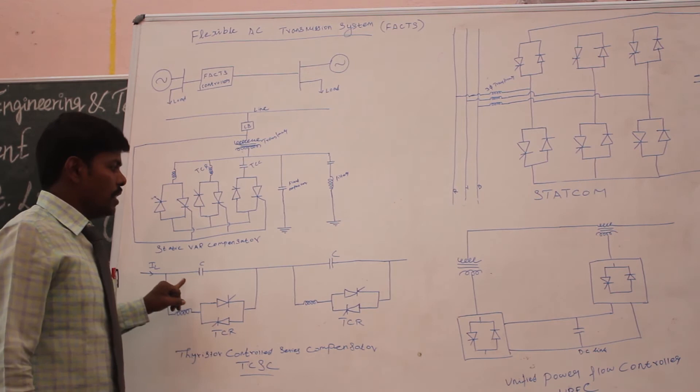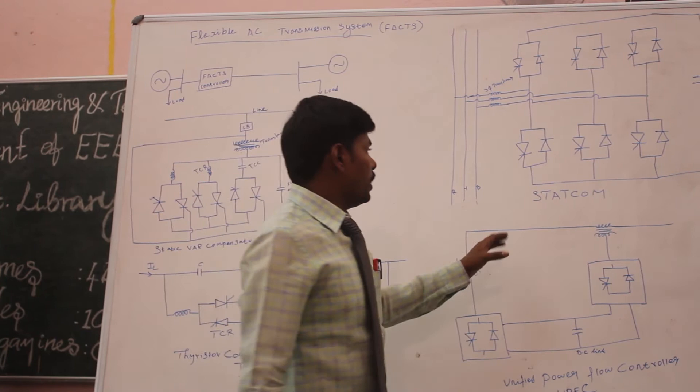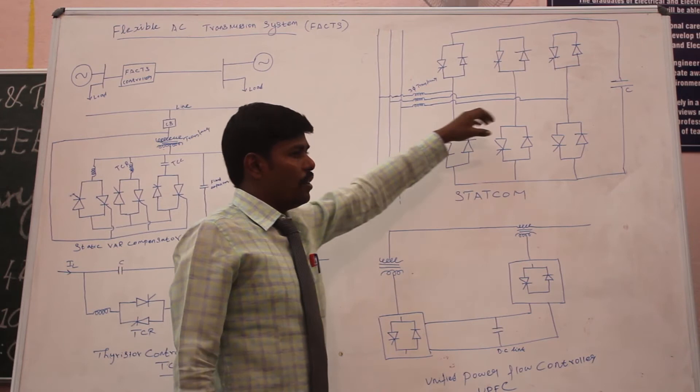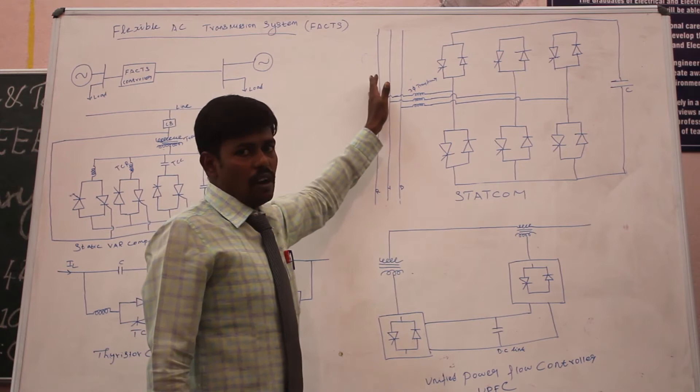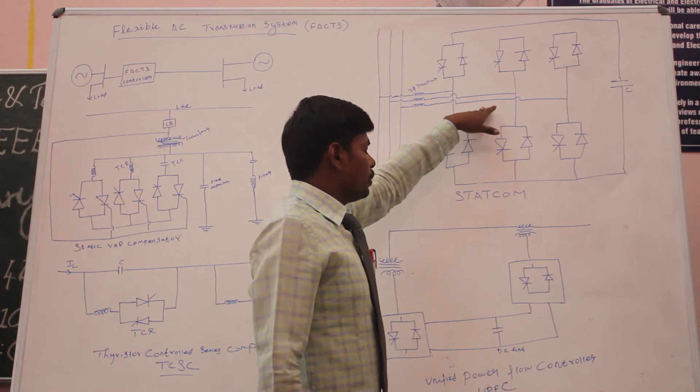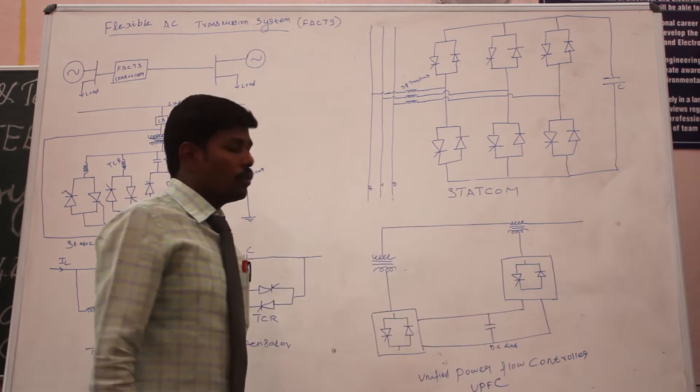That is STATCOM. STATCOM is a power electronics device. We are using three-phase thyristor controlled rectifiers, and also here I am using an end capacitor. I am using three phases — phase R, phase Y, and phase B — connected to a three-phase inverter. This comes out of the thyristor controlled rectifier, connected to each and every phase. That is the control device STATCOM.